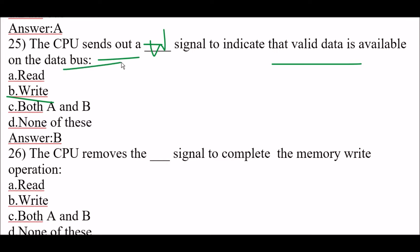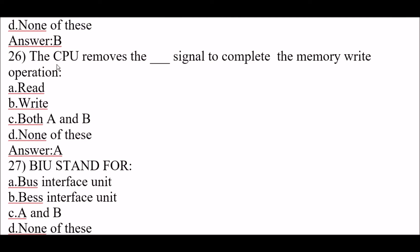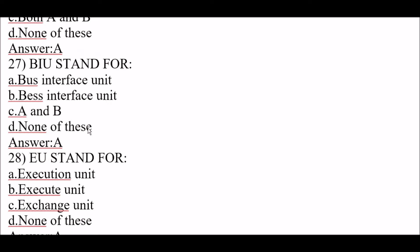Next question: the CPU removes the blank signal to complete the memory write operation. The right answer is option A, read — the CPU removes the read signal to complete the memory write operation. Next question: BIU stands for option A, bus interface unit.